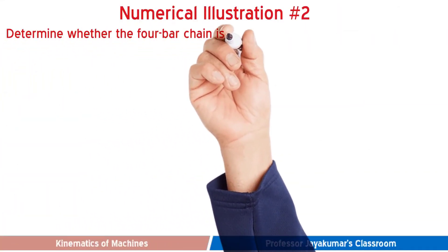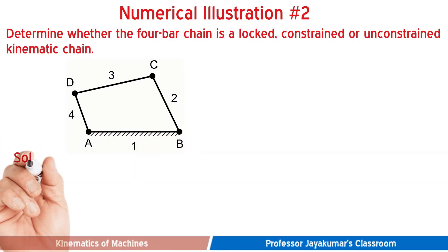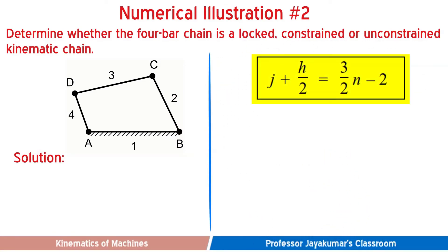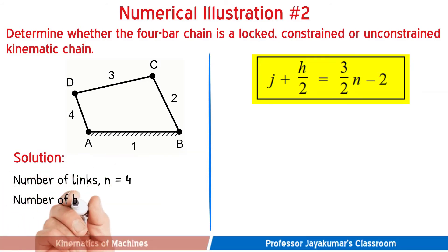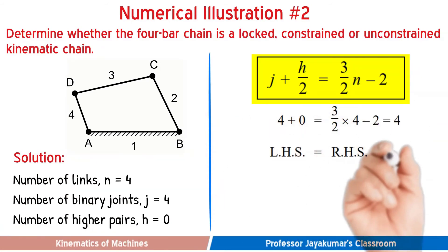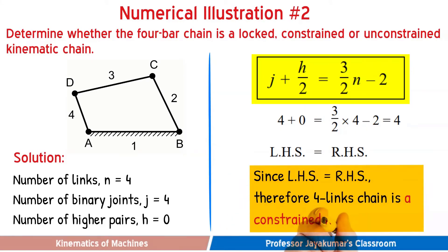In the second numerical problem, let us determine whether the given four-bar chain is a locked, constrained, or unconstrained kinematic chain. From the diagram, the number of links n = 4, the number of binary joints j = 4, and there is no higher pair so h = 0. Substituting all these values in the equation, we get the left-hand side equal to the right-hand side. Since left-hand side equals right-hand side, the four-bar chain forms a kinematic chain and hence can be used for designing a mechanism.